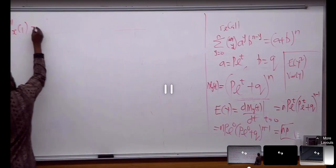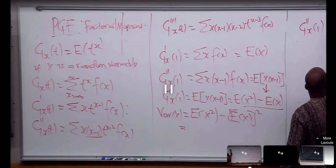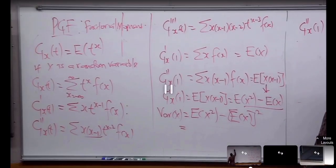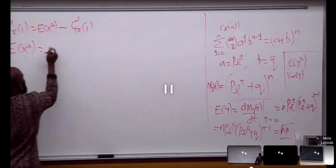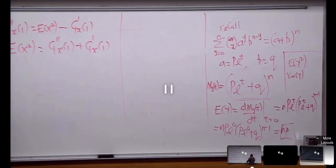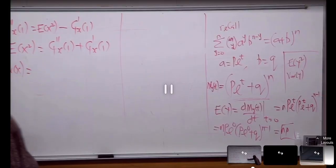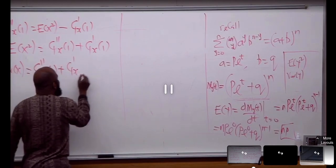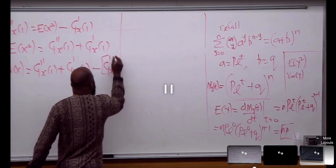From here, G double-prime of X at 1 equals E[X squared] minus E[X], which is G prime of X at 1. So E[X squared] equals G double-prime of X at 1 plus G prime of X at 1. Therefore, the variance of X equals G double-prime(1) plus G prime(1) minus the square of G prime(1).